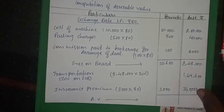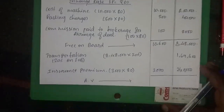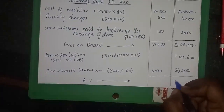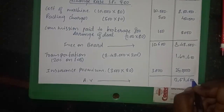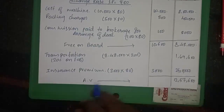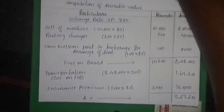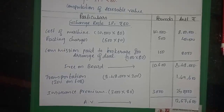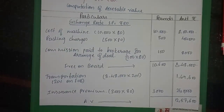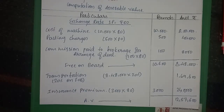Total assessable value comes to 12,57,600 rupees. Based on this assessable value, the custom duty is to be paid accordingly. How much custom duty is payable on this — the connectivity is explained in the video.